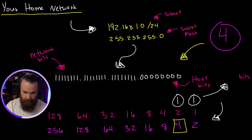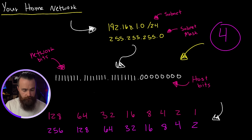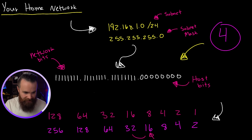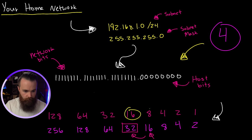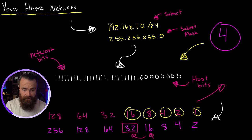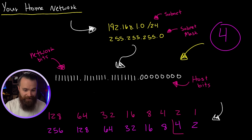Just to drive this home — what if I asked you to make 17 networks? You would tell Nosferatu 2 you need 17. He'd look at his chart: 16 is not quite enough, so we jump to the next one, 32. How many bits did we need to make 32? One, two, three, four, five — five bits. In that scenario, to have at least 17 networks, we'd need to steal five bits from the host. But in our example, all we need is four networks, which only requires two bits.